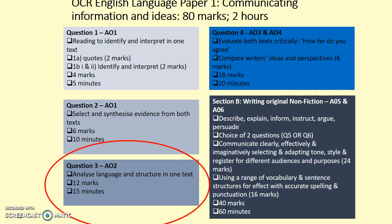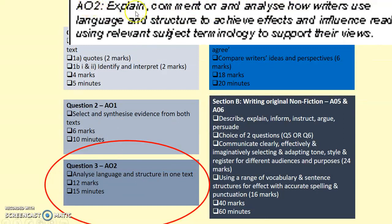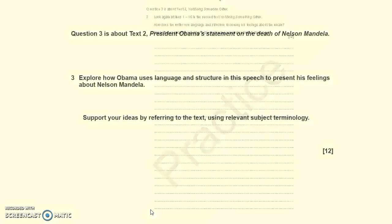Question 3 is assessing your ability to analyze language and structure in one of the two texts that you'll be given to read. It's worth 12 marks, so you should aim to spend about 15 minutes on this question. The assessment objectives are AO2: explain, comment on, and analyze how writers use language and structure to achieve effects and influence readers using relevant subject terminology to support their views. This is how much you're expected to write for this exam, which is roughly just under one side of A4.